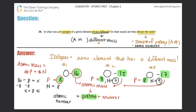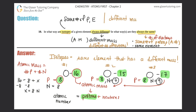So what makes isotopes different is the different number of neutrons, which gives a different mass. Isotopes are technically neutral atoms, and for a neutral atom the number of protons equals the number of electrons. To summarize: isotopes have the same number of protons and the same number of electrons, but different masses because they have different numbers of neutrons.